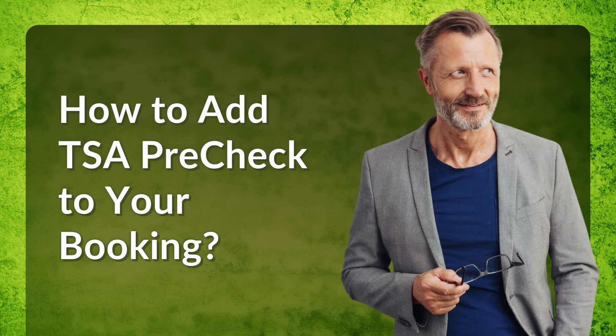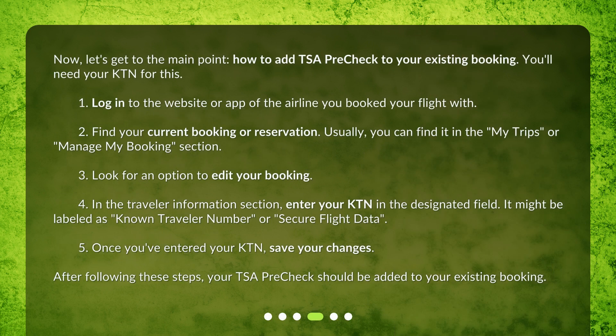Now, let's get to the main point: how to add TSA PreCheck to your existing booking. You'll need your KTN for this. Step 1: Log in to the website or app of the airline you booked your flight with. Step 2: Find your current booking or reservation. Usually, you can find it in the 'My Trips' or 'Manage My Booking' section.